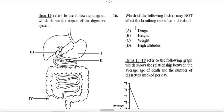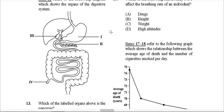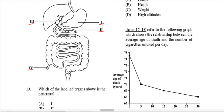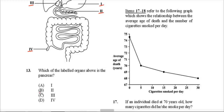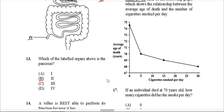Item 13 refers to a diagram of the organs of the digestive system. Which labeled organ is the pancreas? Label 1 points at the stomach, label 2 is the actual answer — the pancreas, label 3 points at the gallbladder, and label 4 points at the appendix of the large intestine. So the answer is B — the pancreas, which looks like a leaf-shaped structure.